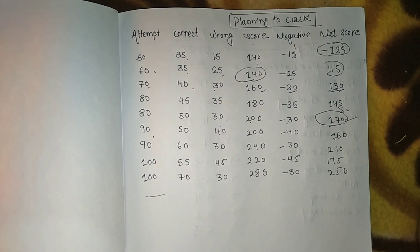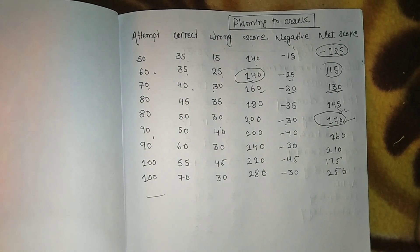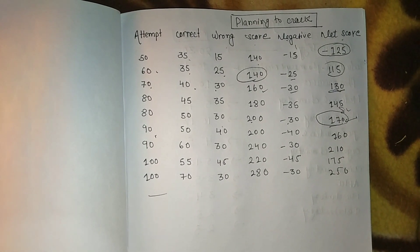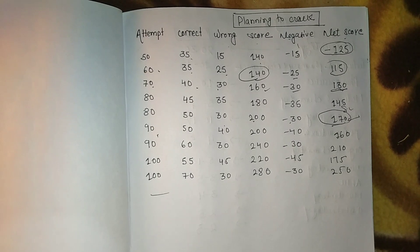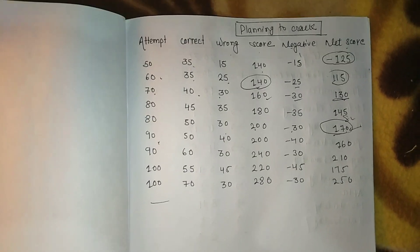Next one: if you attempt 100 questions, 55 correct and 45 incorrect, your score is 220 minus 45, giving you a net score of 175.